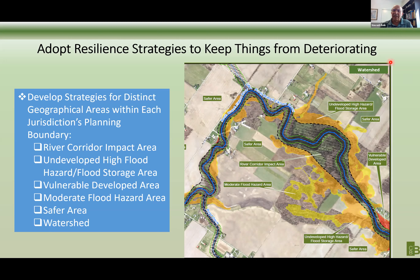And lastly, the entire watershed — which, as Bob pointed out, introduces all the flow and sediment into the system. Whatever we can do in the watershed to keep that water from running off, from retaining and infiltrating it, basically helps our system. The watershed is also the last zone and there are strategies to implement within it.